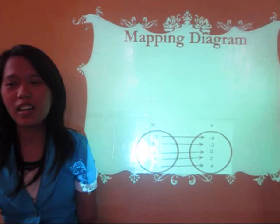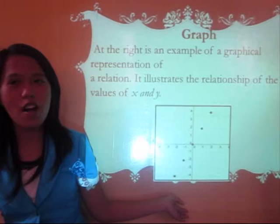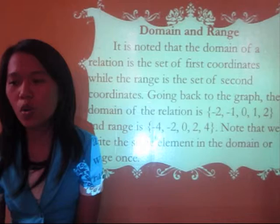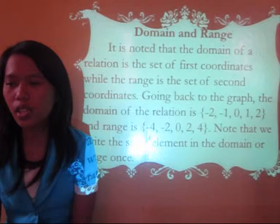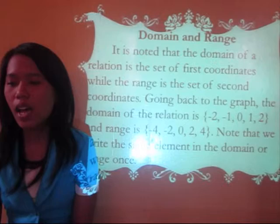The next representation is the graph. The domain of a relation is the set of first coordinates, while the range is the set of second coordinates. Going back to the graph, the domain of the relation is negative 2, negative 1, 0, 1, and 2. And the range is negative 4, negative 2, 0, 2, and 4.